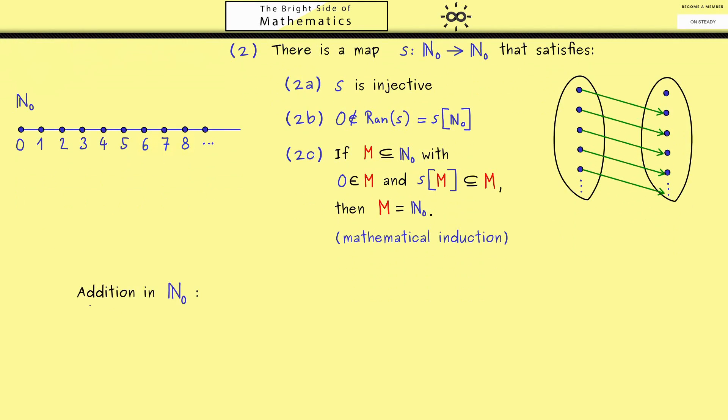Of course, the first calculation one learns is given by the addition. This operation of adding two numbers you can see as a map from the Cartesian product into the natural numbers again. We just combine two natural numbers, and from now on let's use the variables m and n for natural numbers.